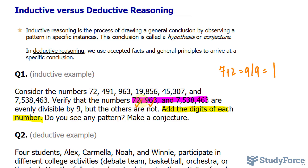We're 2 for 2 so far. Let's see if the pattern holds true for the last one. Adding up 7 plus 5 plus 3 plus 8 plus 4 plus 6 plus 3, we get an output of 36. Taking that sum of 36 and dividing it by 9 gives us 4. It also turns out that if we take this whole number and divide it by 9, we get an integer output, which means that it too is divisible by 9. So the conjecture we can make here is that if the sum of the digits of a number is divisible by 9, then the whole number is also divisible by 9.